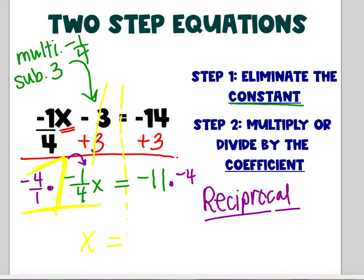So I'm left with x. And what's negative 11 times negative four? Positive 44.